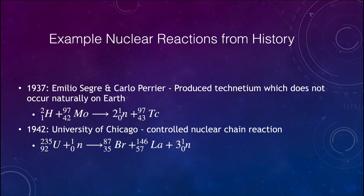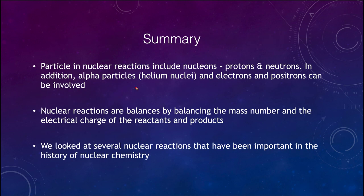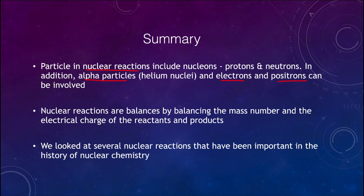In summary, the particles in nuclear reactions include nucleons — protons and neutrons — as well as alpha particles, which are helium nuclei, electrons, and positrons. Remember that positrons are electrons with a positive charge and are a piece of antimatter. Nuclear reactions are balanced by balancing the mass number and the electrical charge of the reactants and products — mass and charge must both be conserved. That concludes this lecture on nuclear equations. We'll be back next time for another topic in physical science.